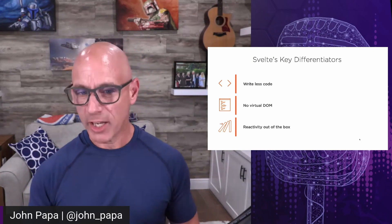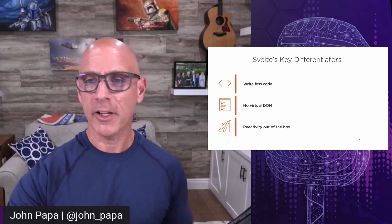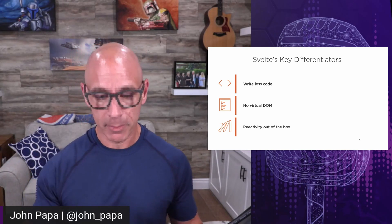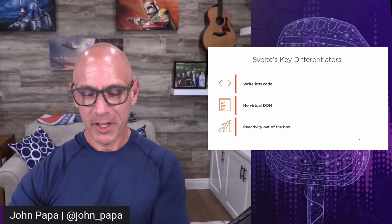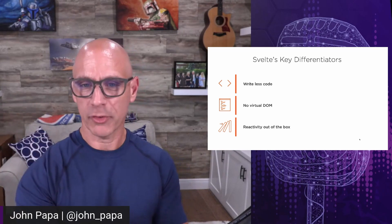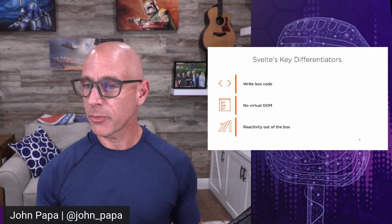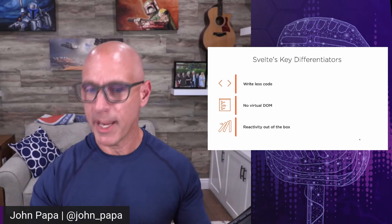If I slap Christopher across the face — there was a reaction and it caused him to move in a different direction. Think about this with web applications: when something changes in the web app, you want that to react to the changes and then show different data. A great example is you go get a list of customers in your code, you put it into Svelte, and you want Svelte to react to those changes and then show them on the screen.